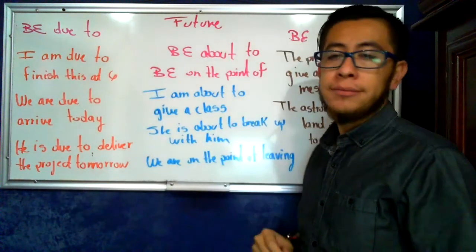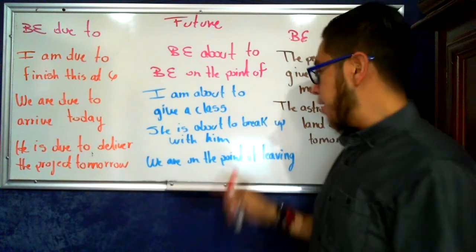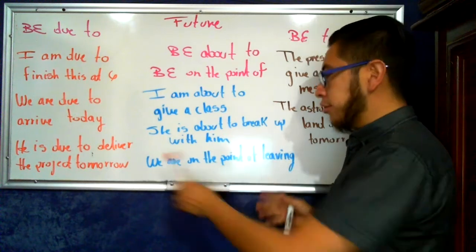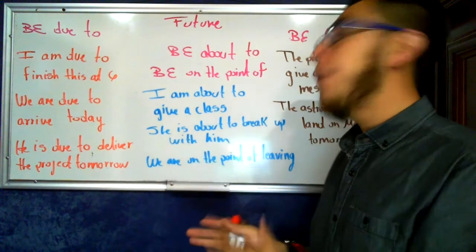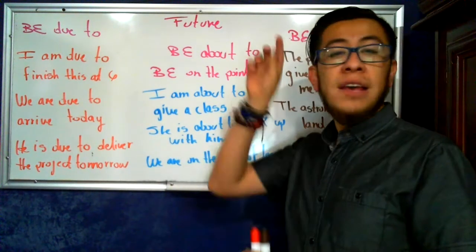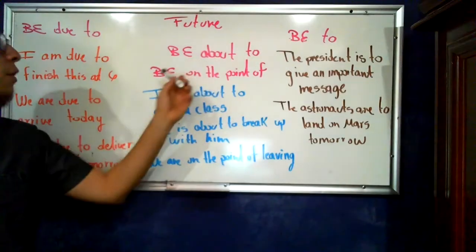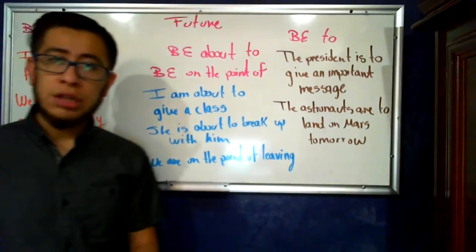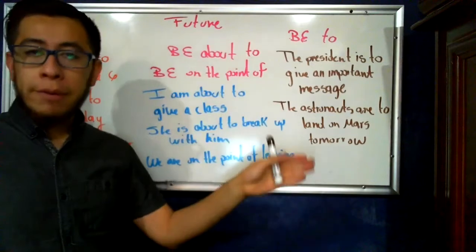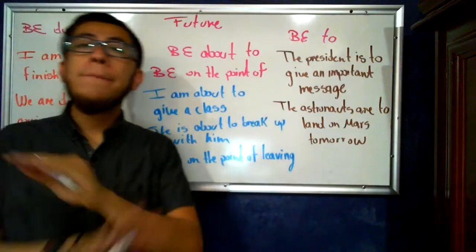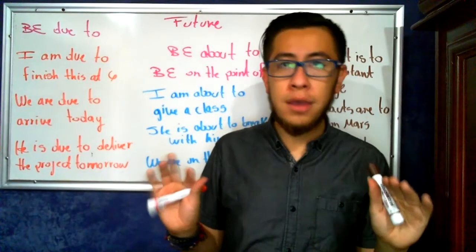She's about to break up with him. I mean, she's about to. I am about to give a class. I'm about to give a class. And right here you can't see it very well, but we have we are on the point of leaving. Okay, please, hurry. Why? Because we are on the point of leaving. We're about to leave. Now, students, there is no difference between be about to and be on the point of. You can use them as you like. The important thing is to remember. After to, normal verb. After of, ing. But in general it's the same. There's no difference between them.